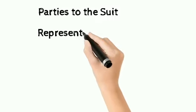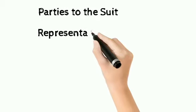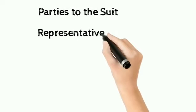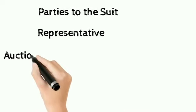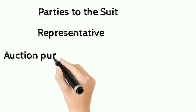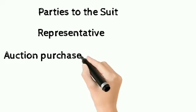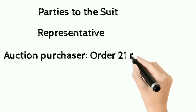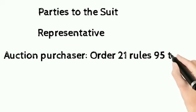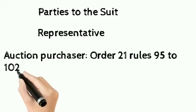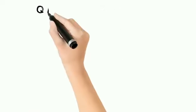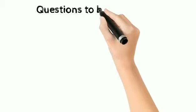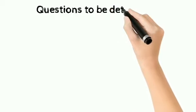Representatives have a wider scope here, which we read in Section 50 CPC 1908, which covers legal representatives. Legal representative covers only the estate, but here by assignment and auction purchaser under Order 21 Rules 52 and 102 — which means if you have any dispute as a judgment debtor, you will need to file a separate suit.